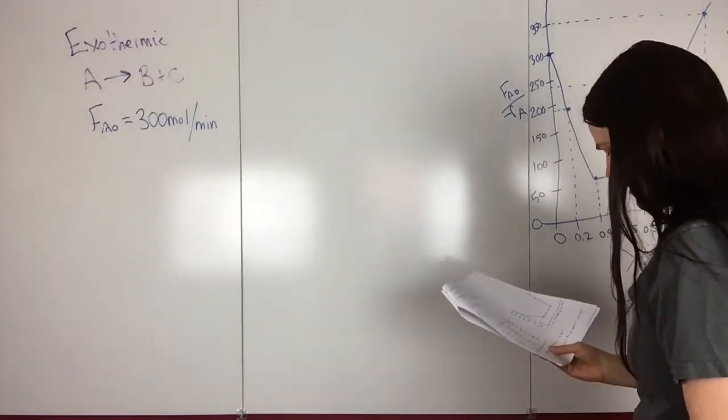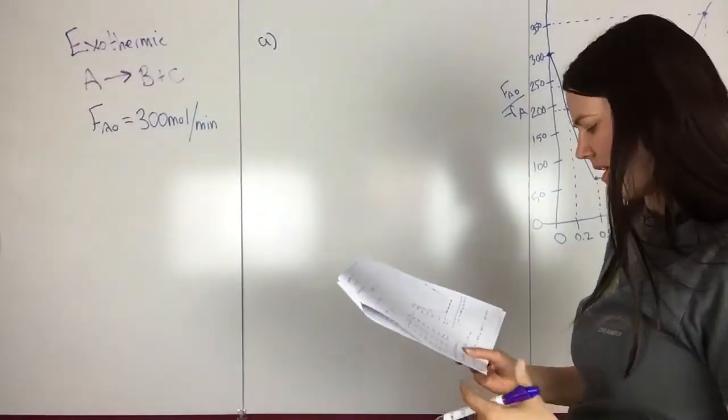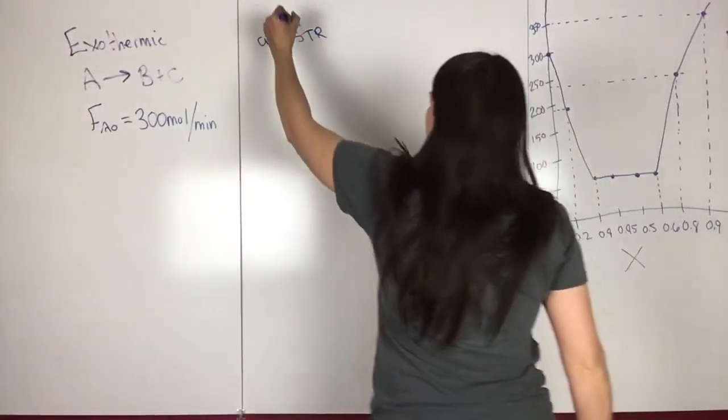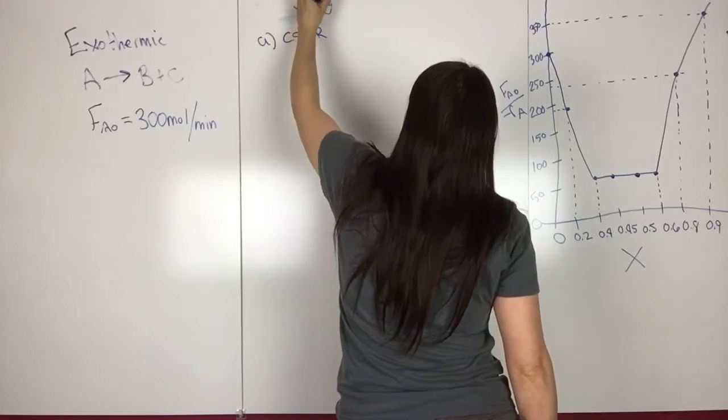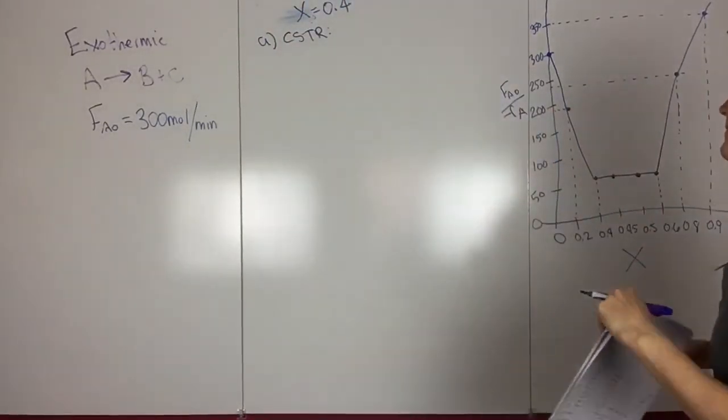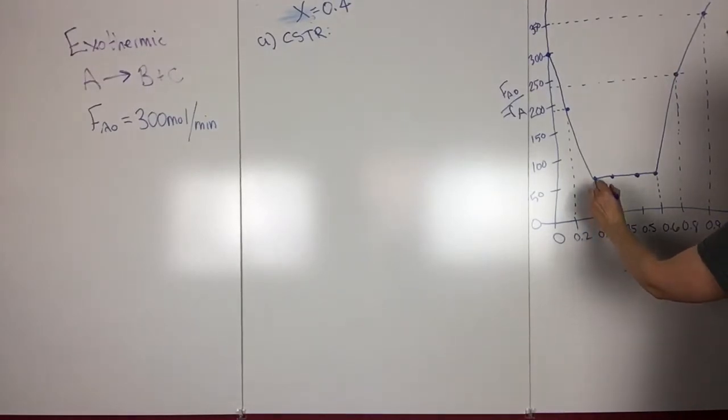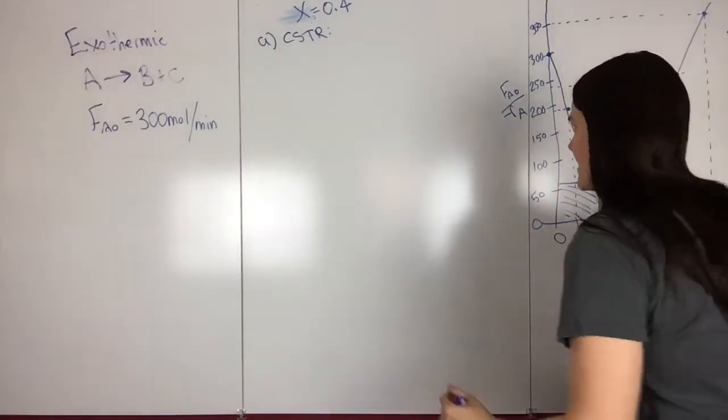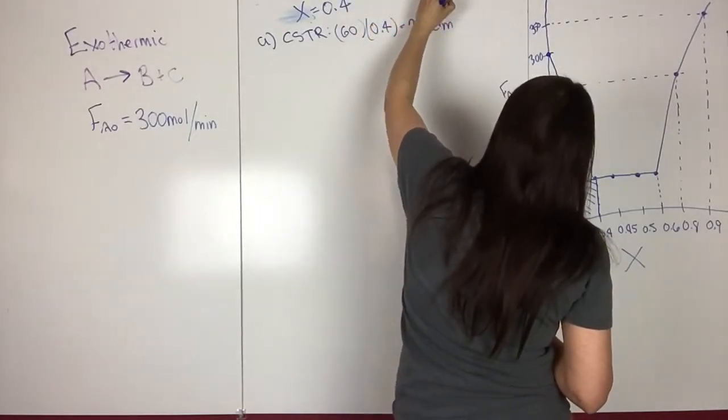For A, it's asking for the volume of a CSTR and also a PFR. It's asking for the PFR and CSTR volume necessary for 40% conversion. So X equals 0.4. For a CSTR, we can just go to this plot and X equals 0.4 is right here. So then we would just draw up and over. And then it's just this area. So that was about 60. So 60 times 0.4, and that's equal to 24 dm³.